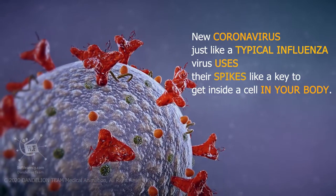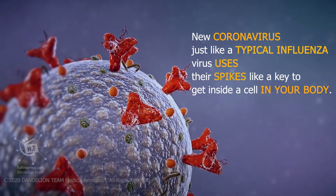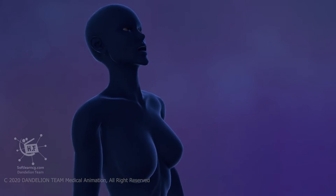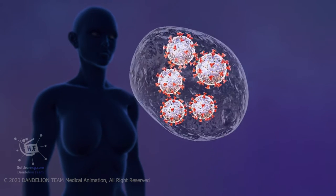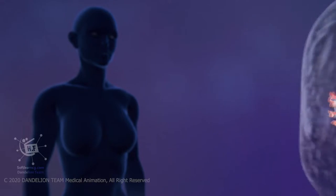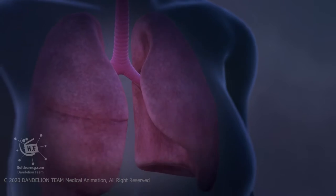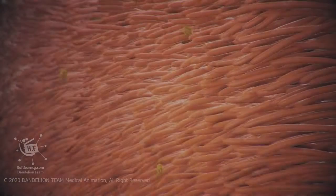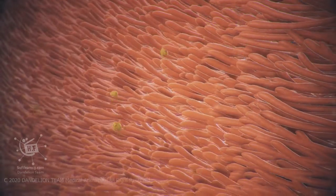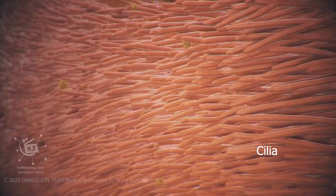Projecting from the envelope are spikes of protein molecules. The new coronavirus, just like a typical influenza virus, uses these spikes like a key to get inside a cell in your body. When an infected person talks, coughs, or sneezes, droplets carrying the virus may land in your mouth or nose and then move to your lungs.